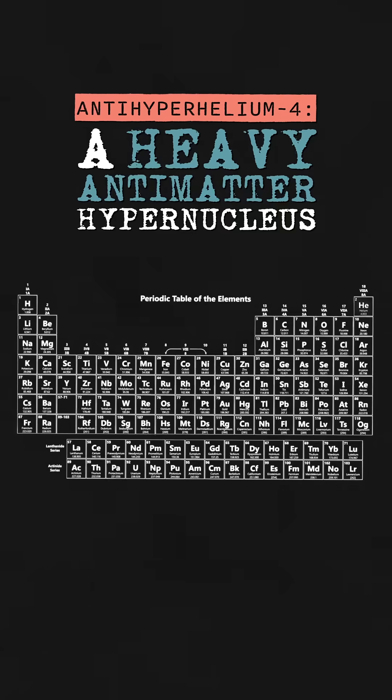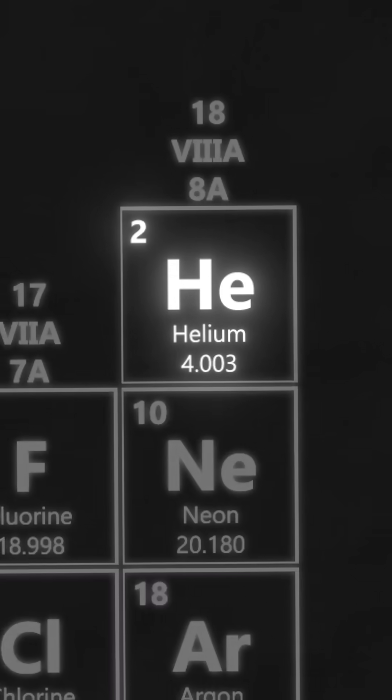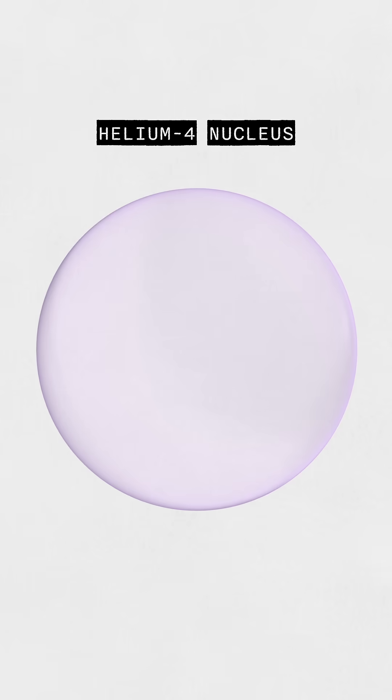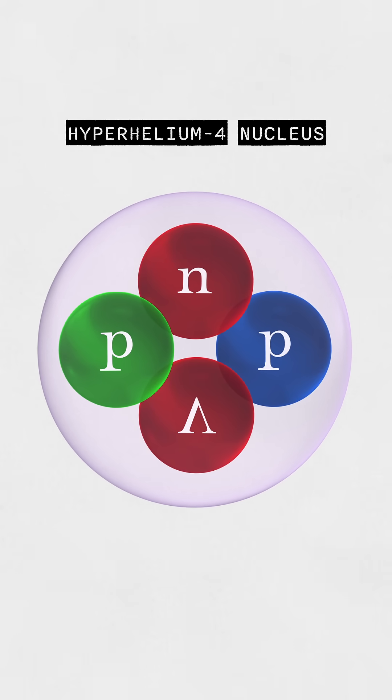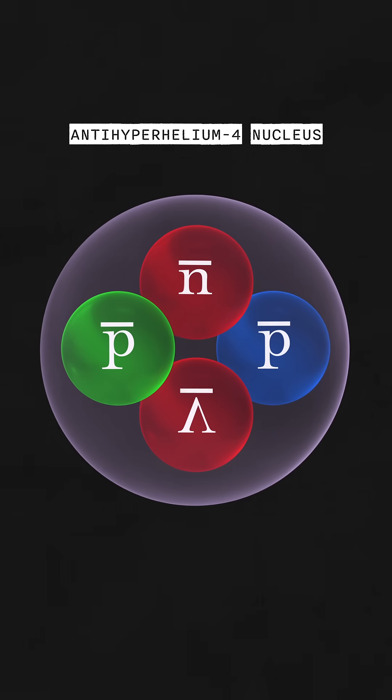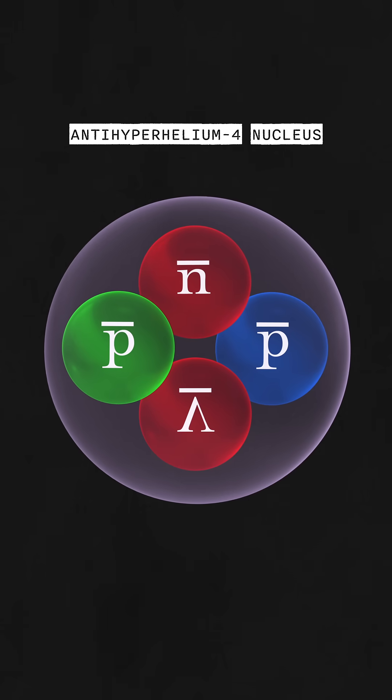Antihyperhelium-4 is the antimatter counterpart of hyperhelium-4, with a nucleus containing two protons, two neutrons, and an antilambda. It's the most complex antimatter nucleus detected at the Large Hadron Collider.